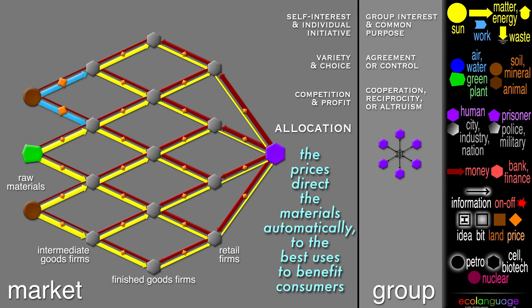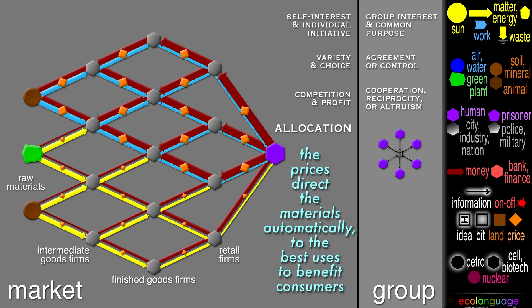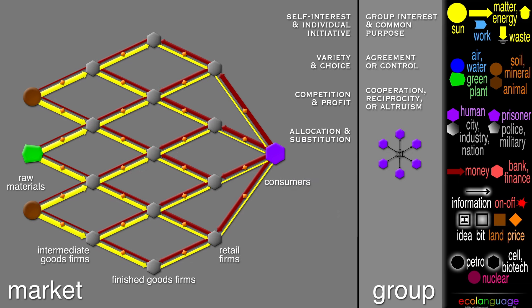We can use a different color to show that if there is a shortage of something, then the prices will go up. It costs more money from raw materials to consumers. If a cheaper material can be substituted, that can bring the prices down, and the firms still costing more must adjust or lose business. Automatic allocation and substitution are an important major capability of the market system.